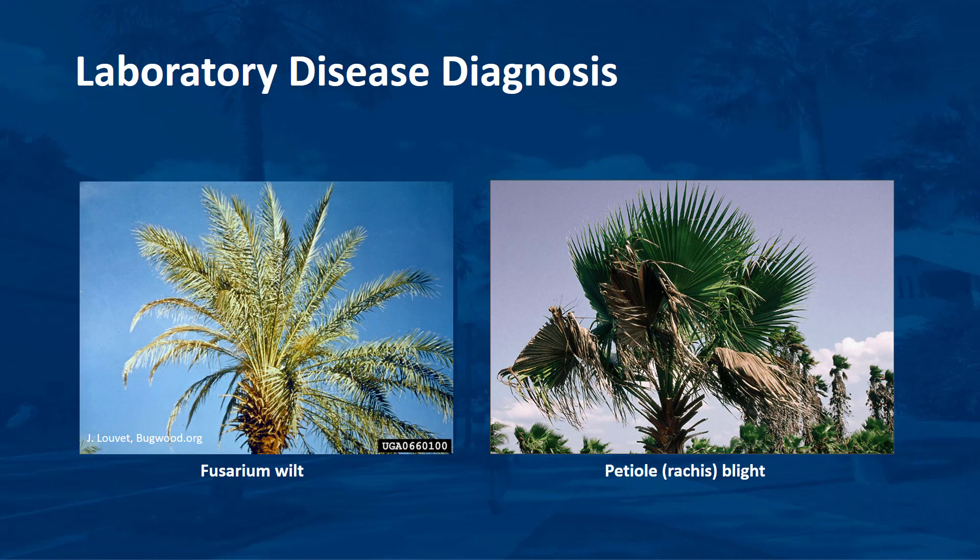Sometimes a laboratory diagnosis is necessary because two diseases have identical symptoms. For example, fusarium wilt and petiole blight of Canary Island date palm have similar symptoms, but one is lethal and the other is not. If confirmation of a field disease diagnosis is necessary, it should be conducted by a qualified plant disease diagnostic laboratory. Molecular tests are necessary to confirm fusarium wilt, lethal yellowing, and Texas-Phoenix palm decline.